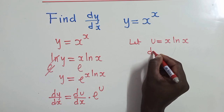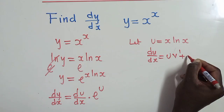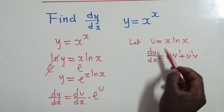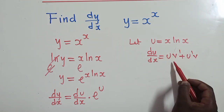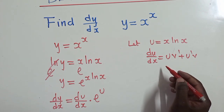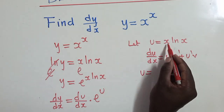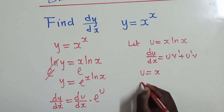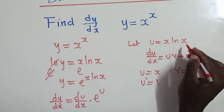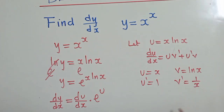To find du/dx, we apply the product rule: u·v' plus u'·v. I also did a video on the product rule, so click the links below if you haven't watched it. Here, our u is x, u' is 1, our v is ln(x), and our v' is 1/x.